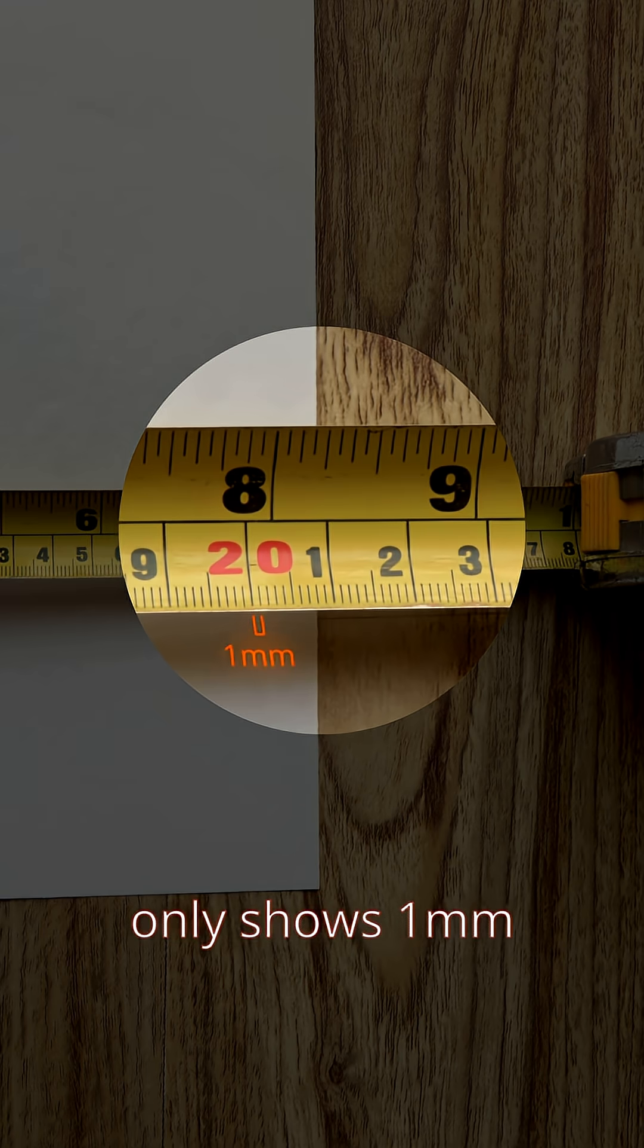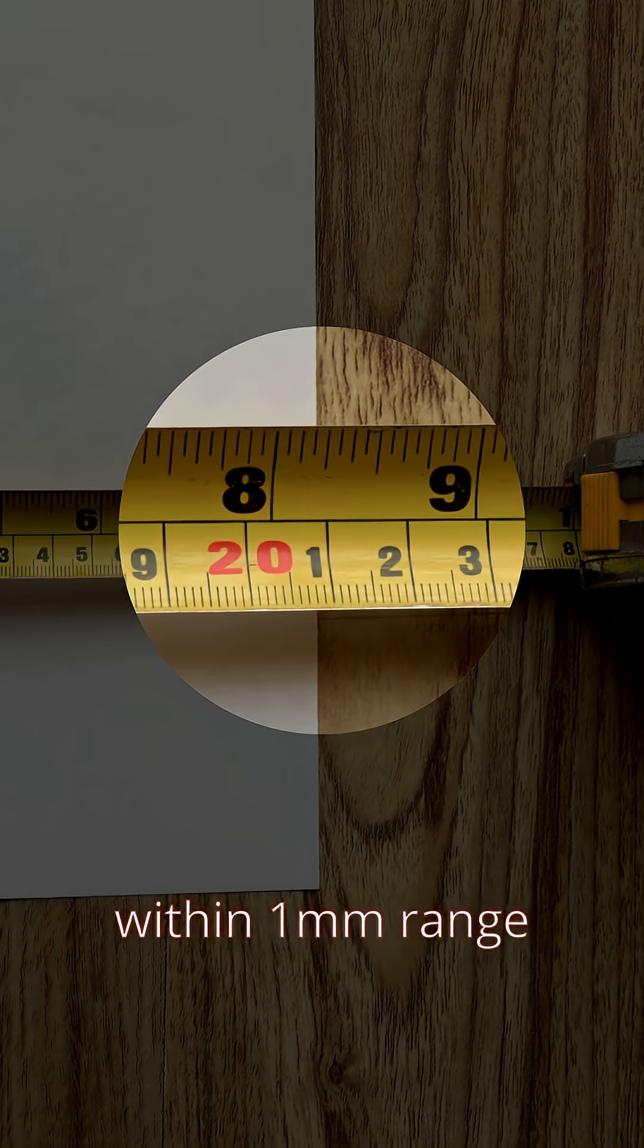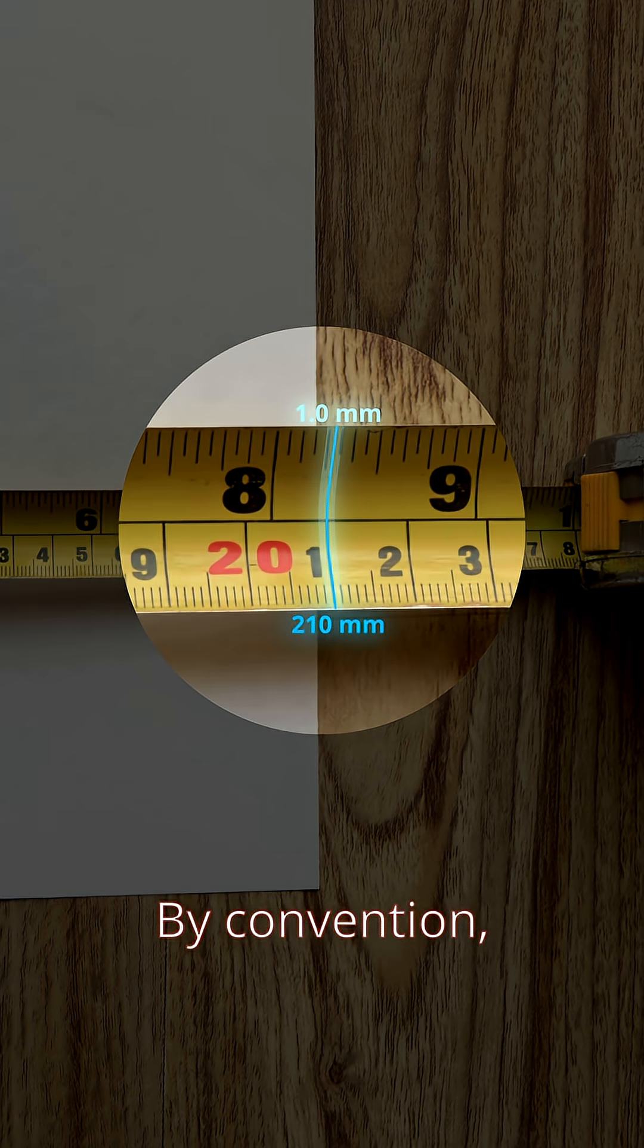Since the tape only shows 1mm increments, we can't tell the exact position between the marks, so we say the measurement lies within a 1mm range, with the center at 210. By convention, you would write this as 210 plus or minus 0.5mm to indicate the uncertainty.